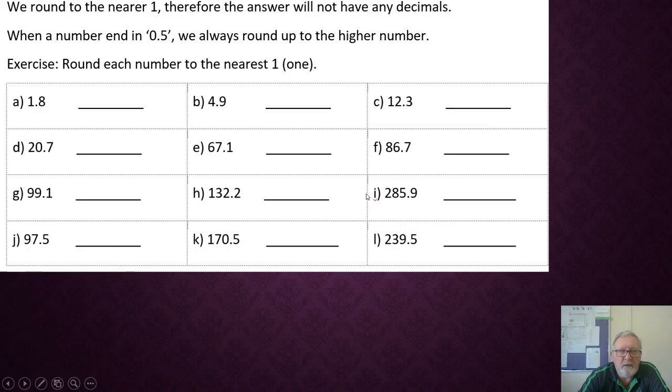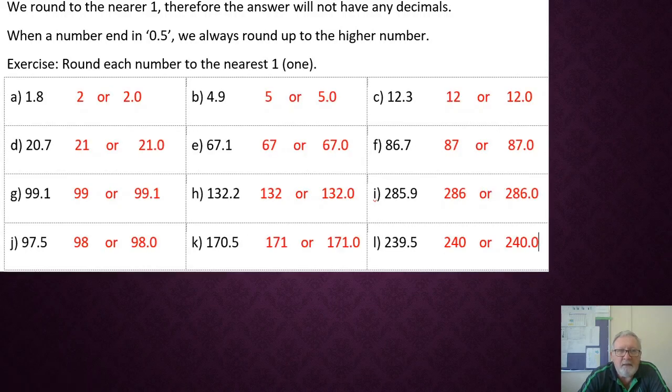Alright, let's see how you went. Here are the answers. One and eight tenths is rounded to two, or if you wanted to put a decimal point in, two decimal zeros. So both answers are the same. They're correct, no matter which way you write it. So pause and have a look. See how you went. Mark your work. Make sure you mark it. Alright, let's hope you've got twelve out of twelve there.